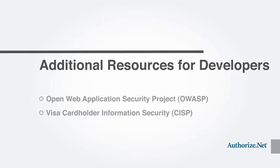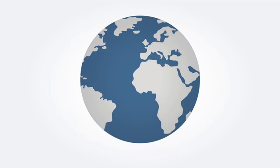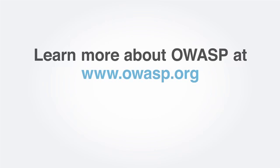In addition to the information you will find at the PCI Security Council website, there are several other useful resources available regarding web security. The Open Web Application Security Project, or OWASP, is one such resource. OWASP is a worldwide, not-for-profit organization focused on improving the security of software. Learn more at OWASP.org.